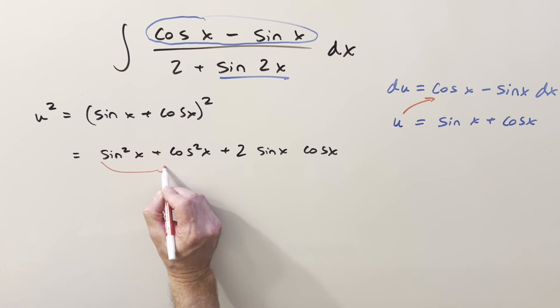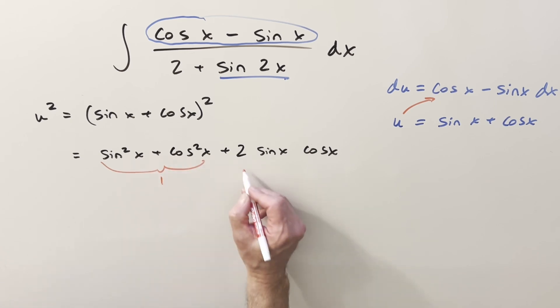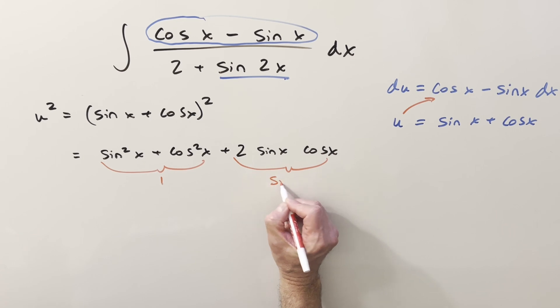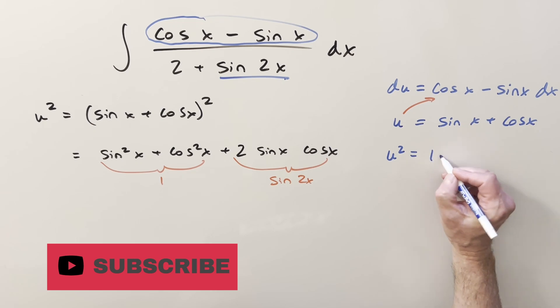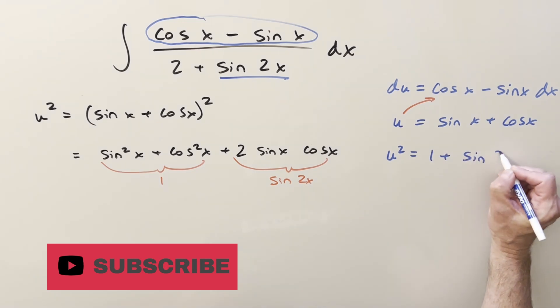But this thing here, this is just a 1. And this thing here, this is just our double angle for sine. So we could write this as sine 2x. And so putting this together, our value for u squared is just going to be 1 plus sine 2x.